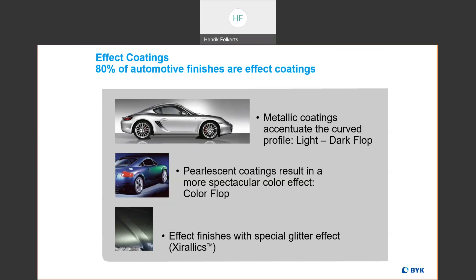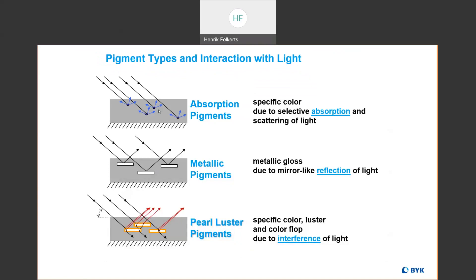There are also pearlescent coatings included in the umbrella of effect coatings. Those are coatings that can produce what we call a color flop effect — where the actual hue of the coating can change depending on your observation angle. There are also other types of effect pigments like Xuralix, which provide a special glitter effect. Here's a slightly more technical view of these different types of pigments.